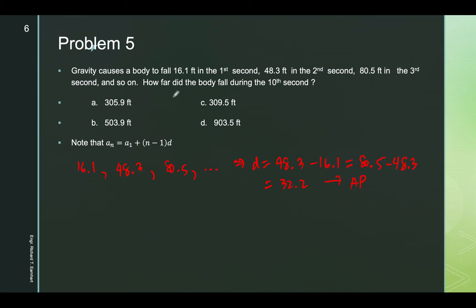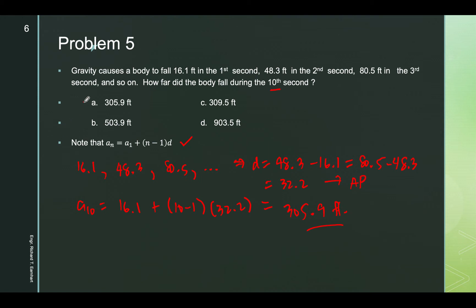We are asked to solve for A sub 10. Using the formula, A10 equals 16.1 plus 10 minus 1 multiplied by the difference 32.2, which gives 305.9 feet. So the answer is letter A.